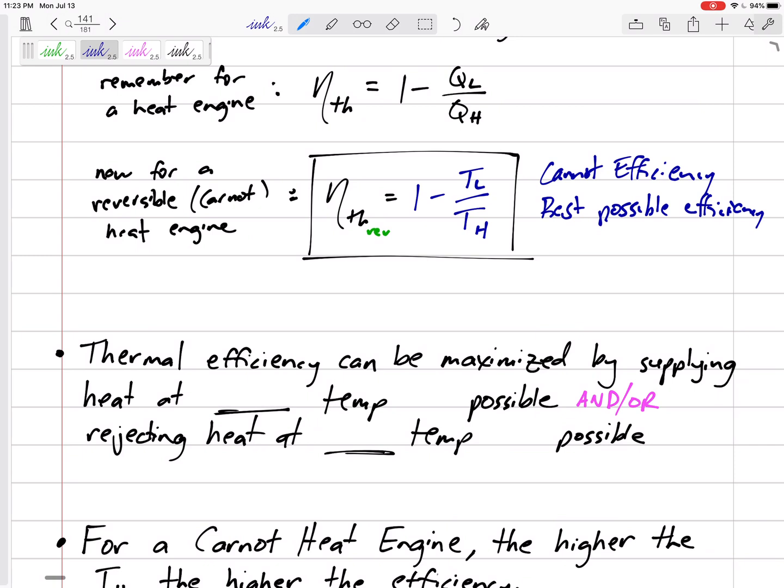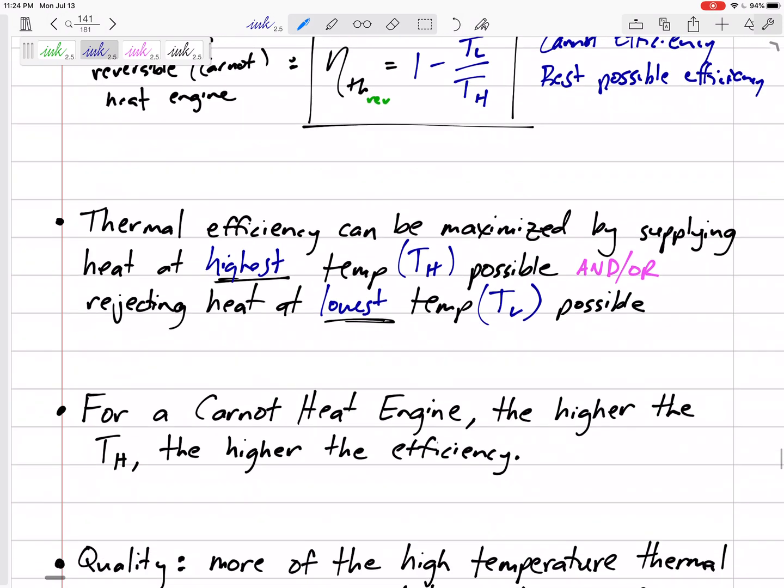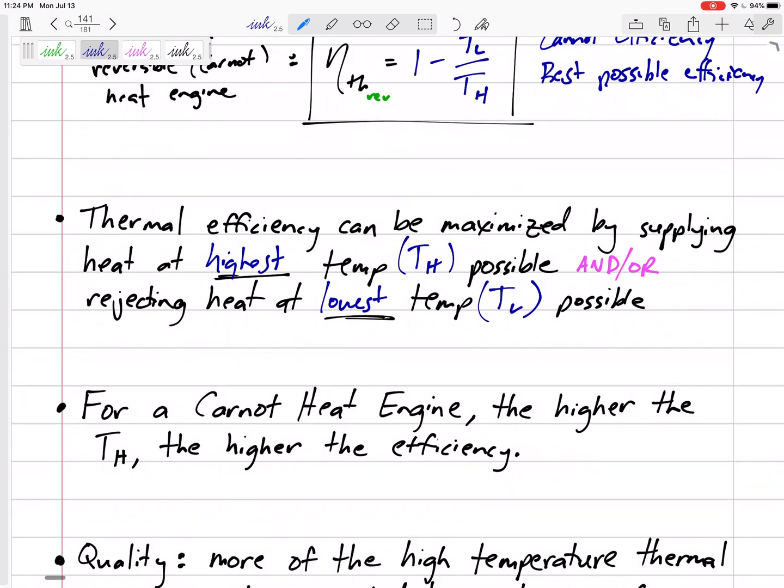You can tell by this equation that the thermal efficiency can be maximized by minimizing this ratio. How can we minimize this? By either maximizing TH or minimizing TL. So the efficiency can be maximized by supplying heat at the highest temperature possible and/or rejecting heat at the lowest temperature TL possible. The higher the temperature of the source or the lower the temperature of the sink, then the better the efficiency.